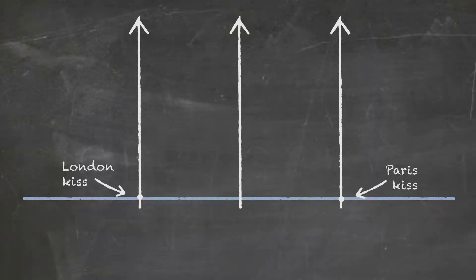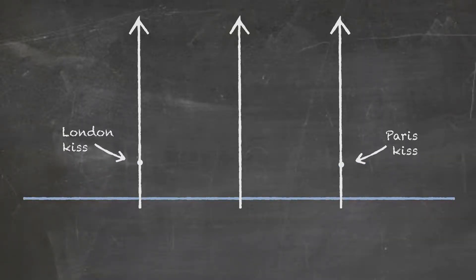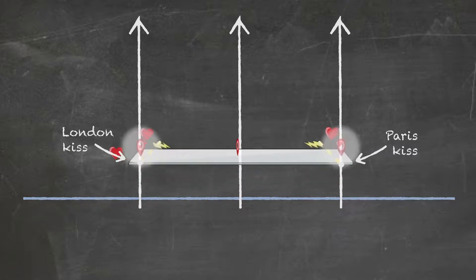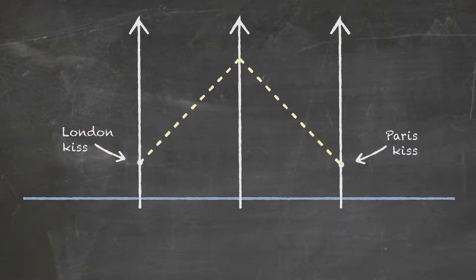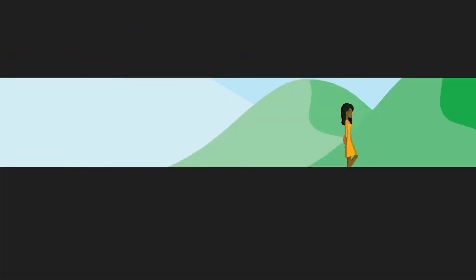Now those lovers could have had their kiss at a slightly later instant in time, and that would determine a different hypersurface of simultaneity. Each instant in time in this reference frame corresponds to a hypersurface of simultaneity. In fact, it looks exactly like the picture we made when we built up space-time using photographs. Each photograph